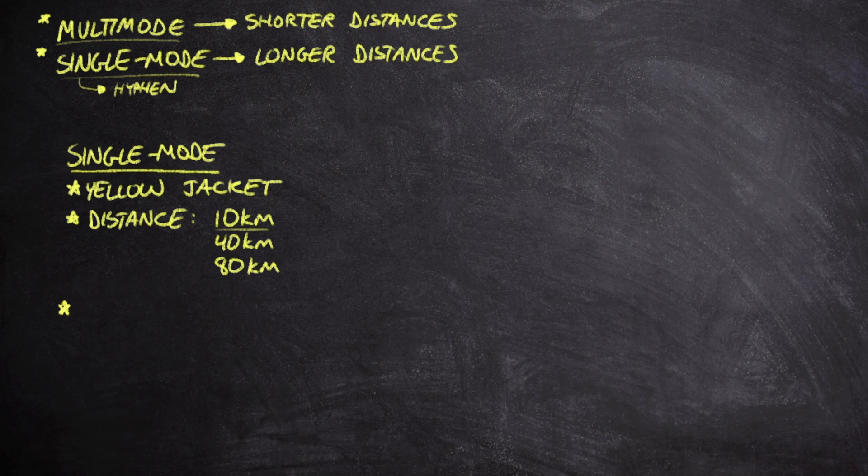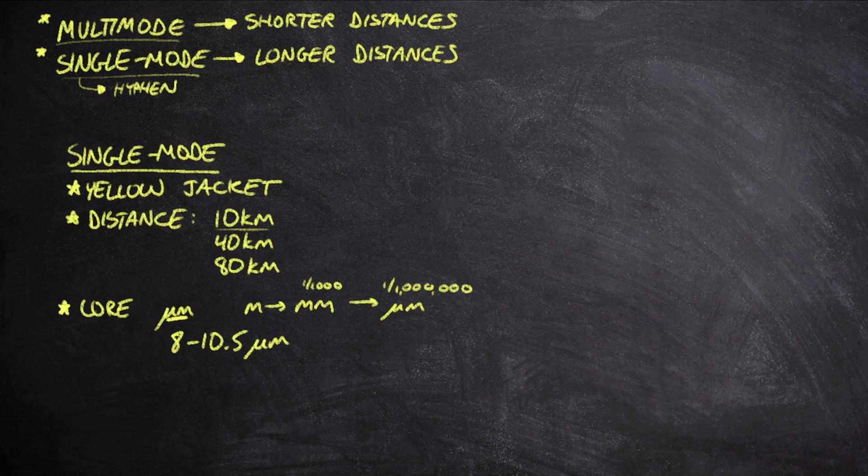What's interesting about single-mode versus multimode is how the fiber optic cable is constructed. When we're talking about the diameters, the sizes of these cores within the cable, we're talking about things on a micrometer scale. We've got meters, then millimeters—one one-thousandth of a meter—and then micrometers, which is one one-millionth of a meter. That's really small. A core for single-mode is between eight and ten and a half micrometers, depending on the construction of the cable.